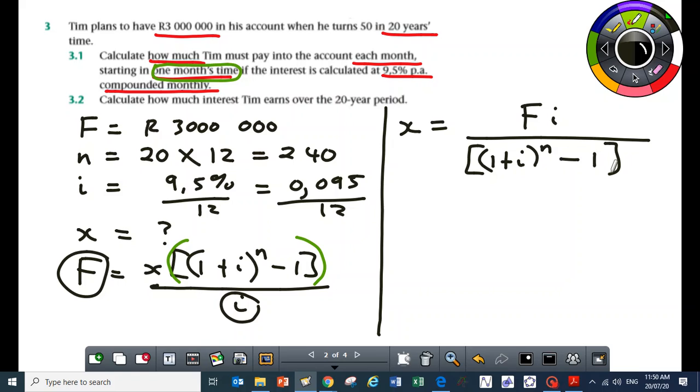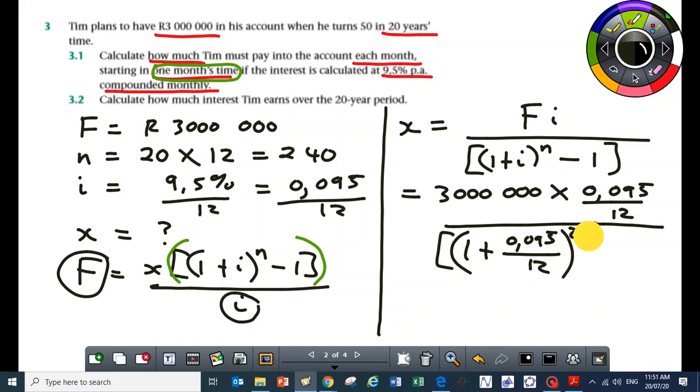This becomes F is 3 million times X. Our X is 0.095 over 12, this is all over open square bracket 1 plus 0.095 over 12 raised to the power of 240, all minus 1. I need someone to calculate that X.